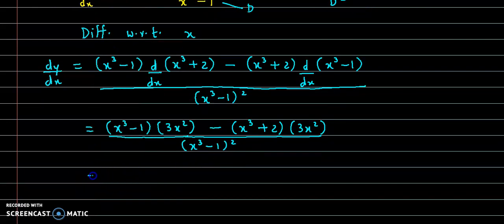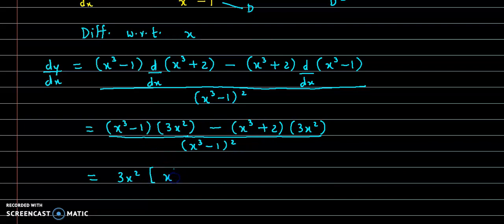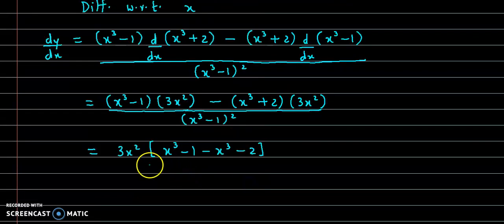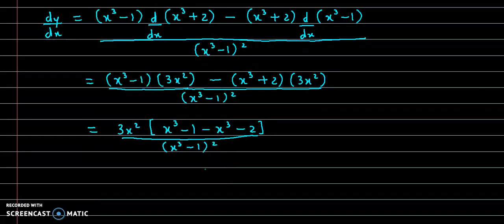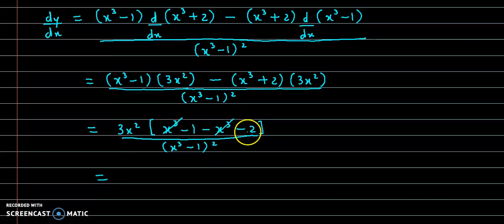Now in the numerator we can take 3x square as a common factor. So taking 3x square common, the two brackets inside will be subtracted. This gives x cube minus 1 minus x cube minus 2, divided by denominator as it is, that is x cube minus 1 the whole square. Now in the bracket, x cube and minus x cube cancel out. Minus 1 minus 2 gives minus 3.